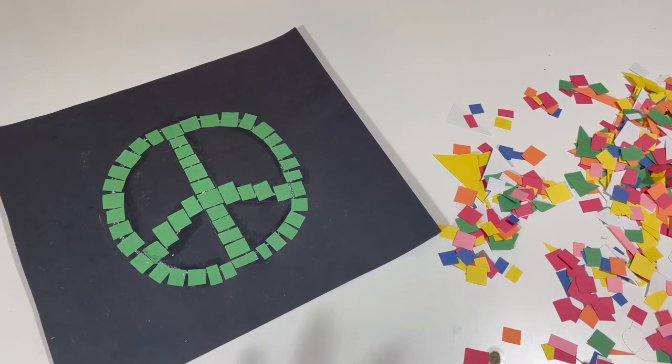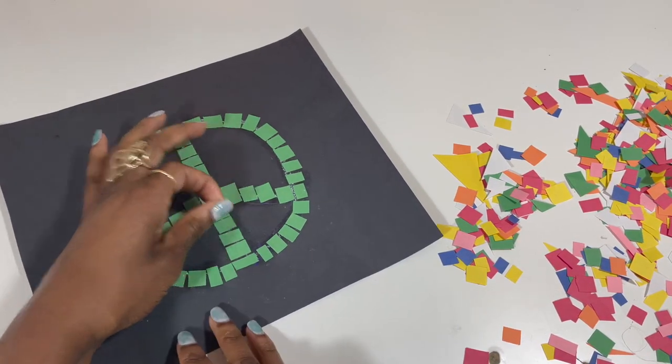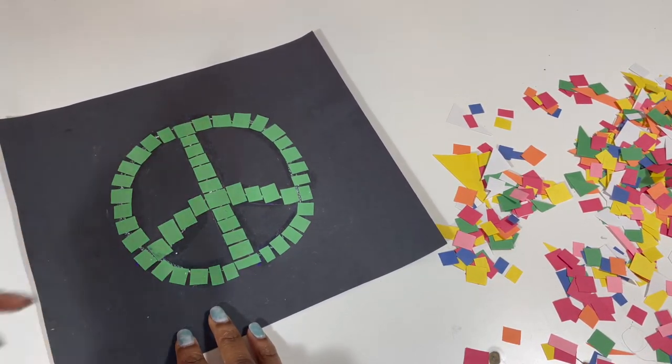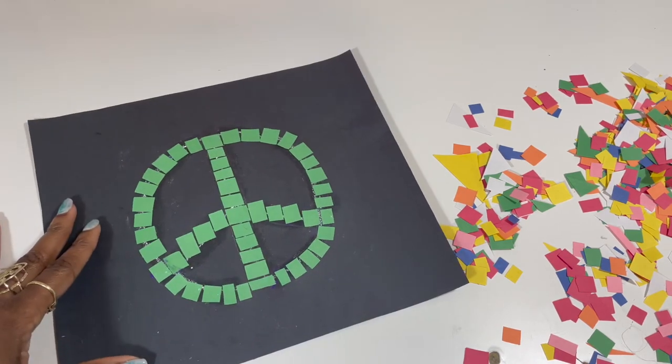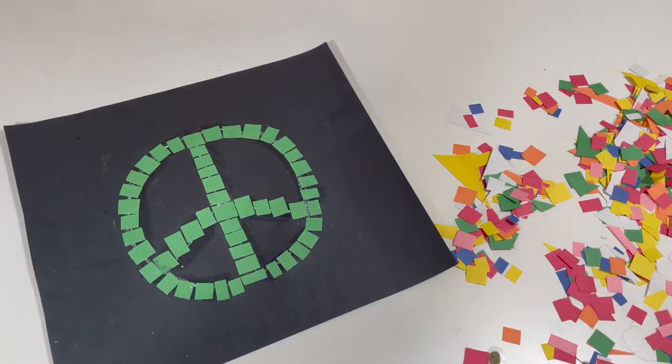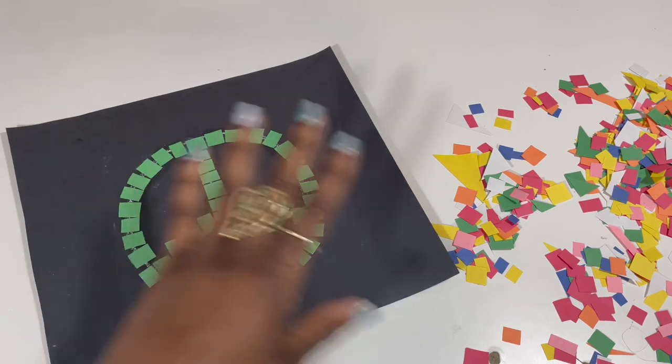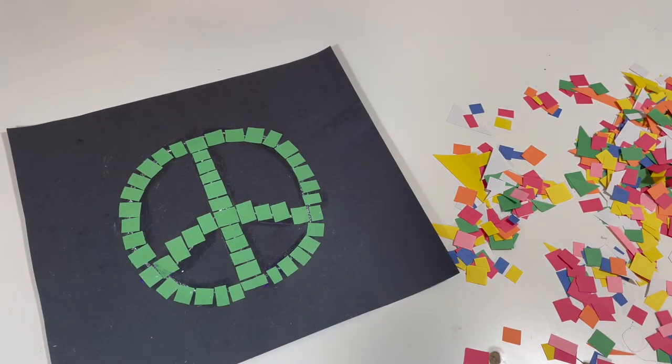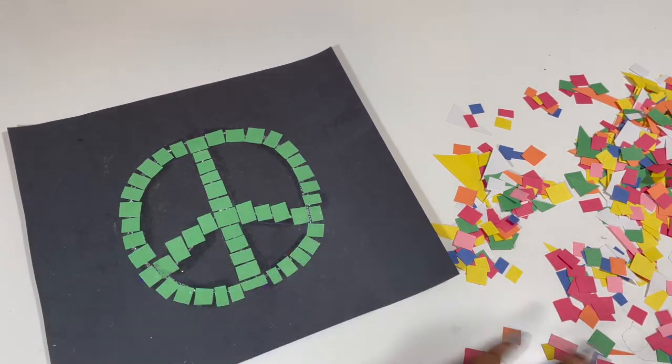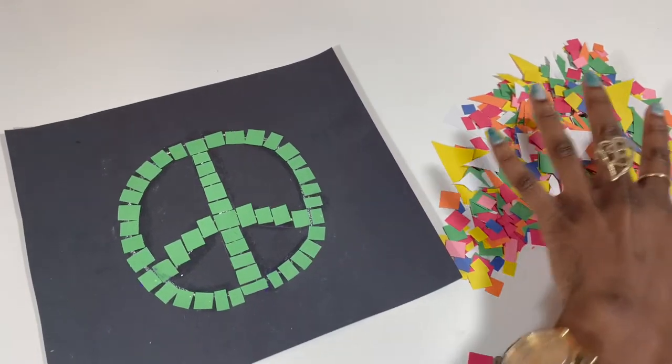Okay, now that we have our outline filled up, what we want to do, and you can start on the insides or the outsides, wherever you want, so we're going to start to fill in our shape using our mosaic pieces.